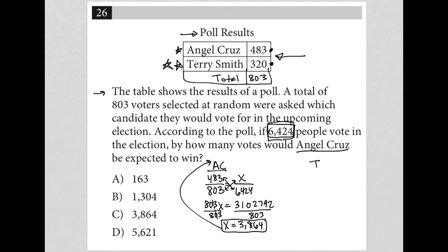Let's do the same thing for Terry Smith. Terry Smith received 320 votes. Actually, there's an easier way to do it — we know there's a total of 6,424 people. We're saying that 3,864 of them would vote for Angel Cruz, which means the remaining people should vote for Terry Smith. 6,424 minus 3,864 gives 2,560 votes for Terry Smith.